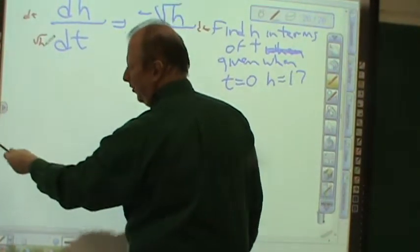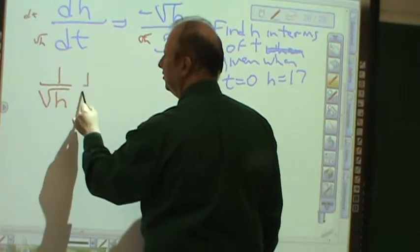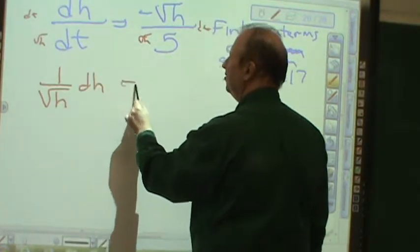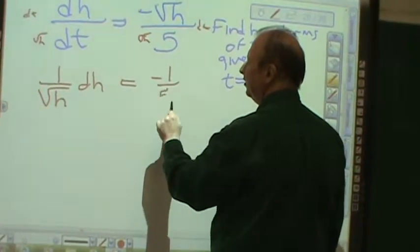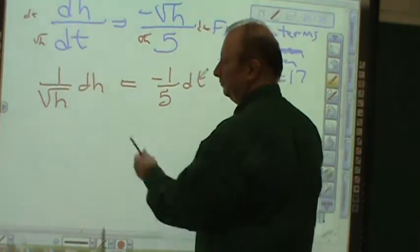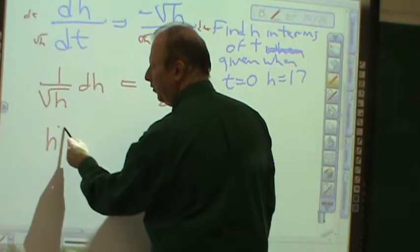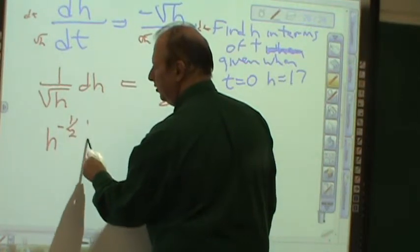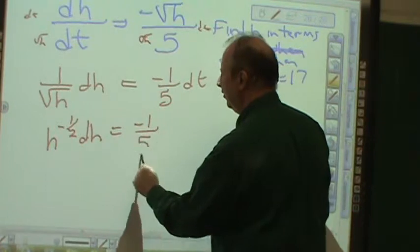Look what I'm left with. 1 over √h dh is equal to negative 1/5 dt. I'm going to rewrite this to make it easier to look at for all of you. h^(-1/2) dh is equal to negative 1 over 5 dt.